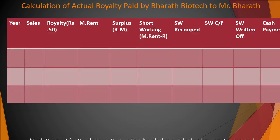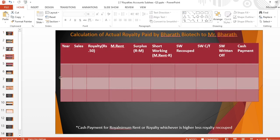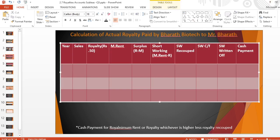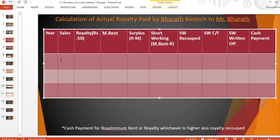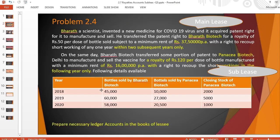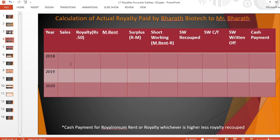The first task is to prepare the royalty table — that is, royalty payable by Bharat Biotech (Lessee) to Mr. Bharat (Lessor). The first step is to consider the year and the sales. For three years — 2018, 2019, and 2020 — we need total sales made by the lessee as well as the sublessee. For the first year: 45,000 plus 10,000 equals 55,000.